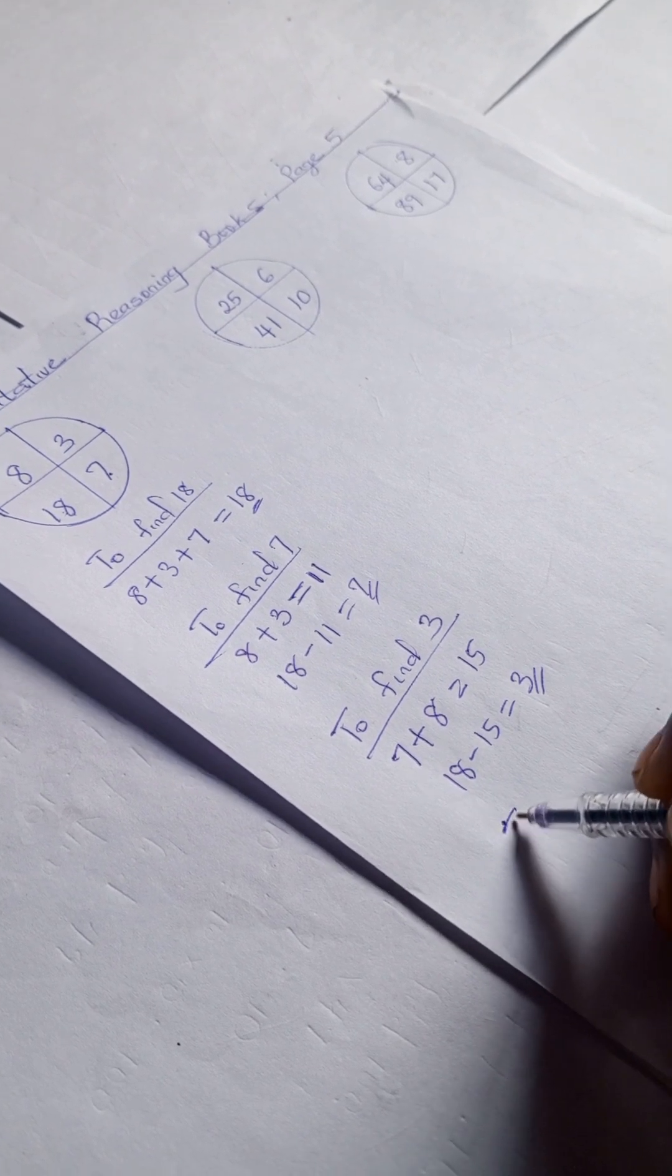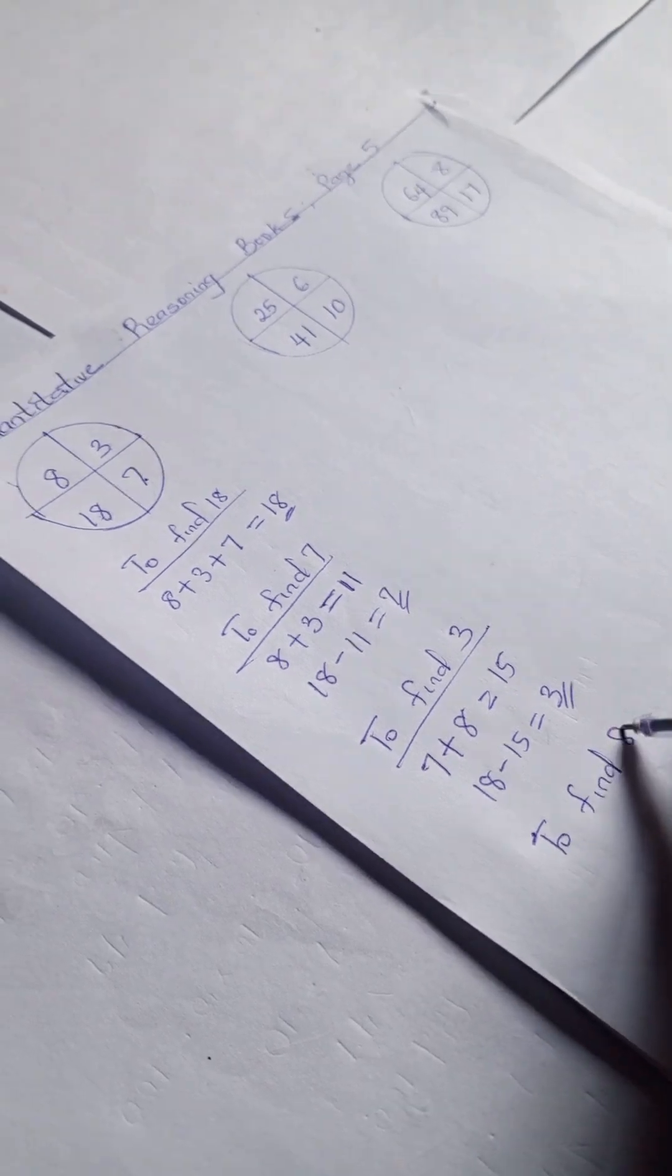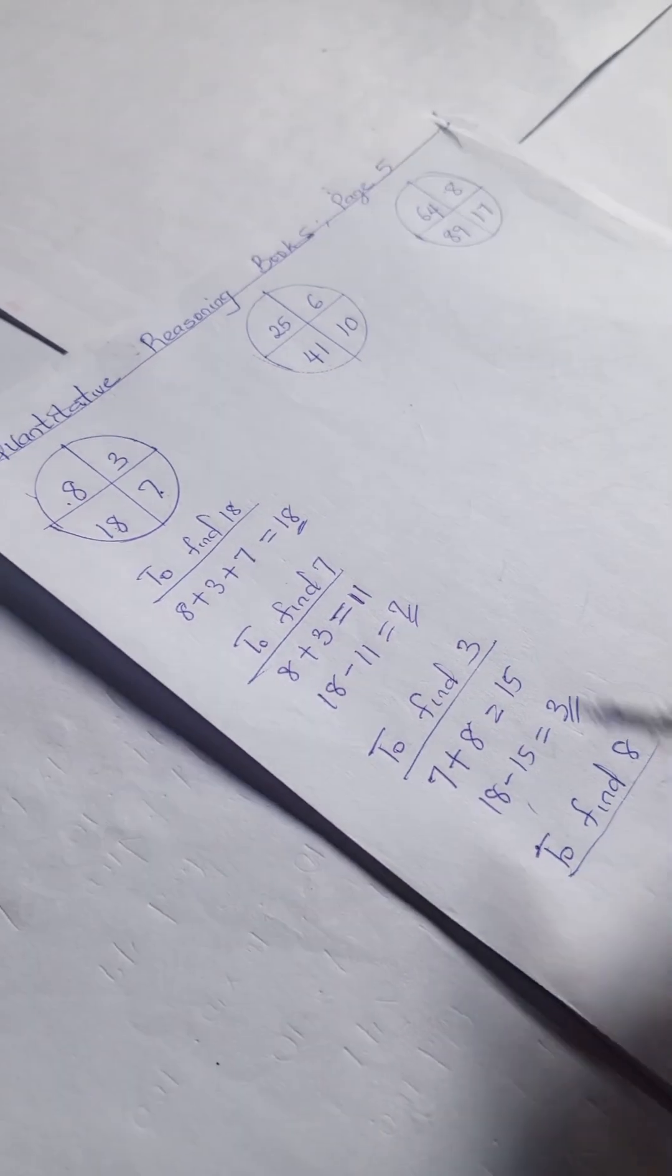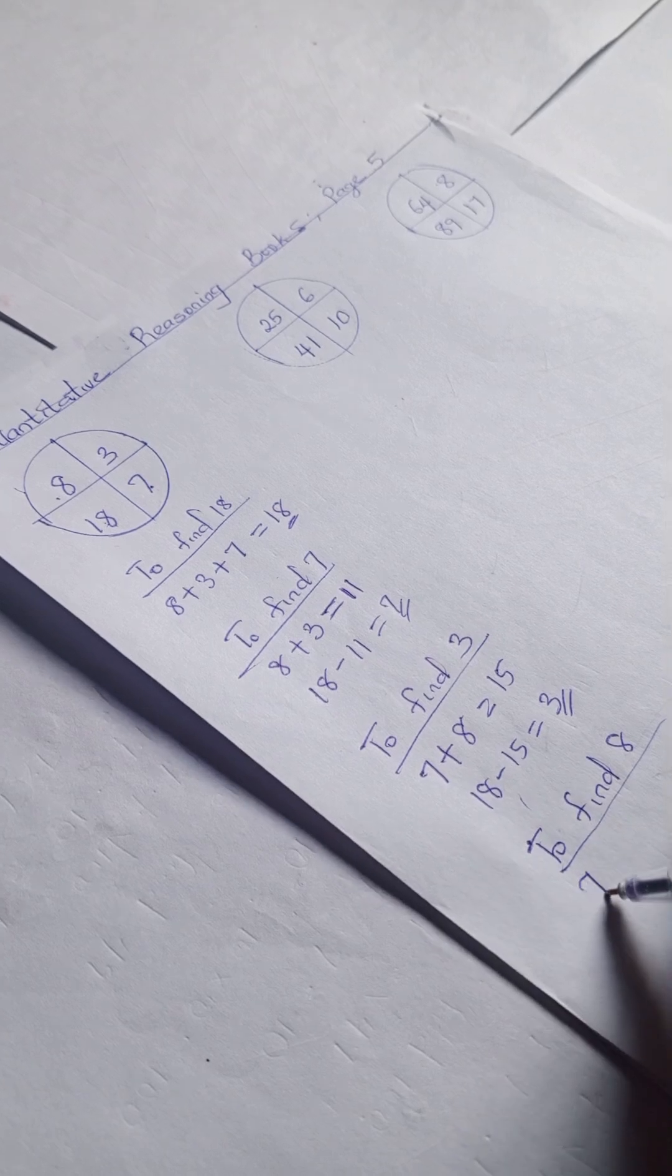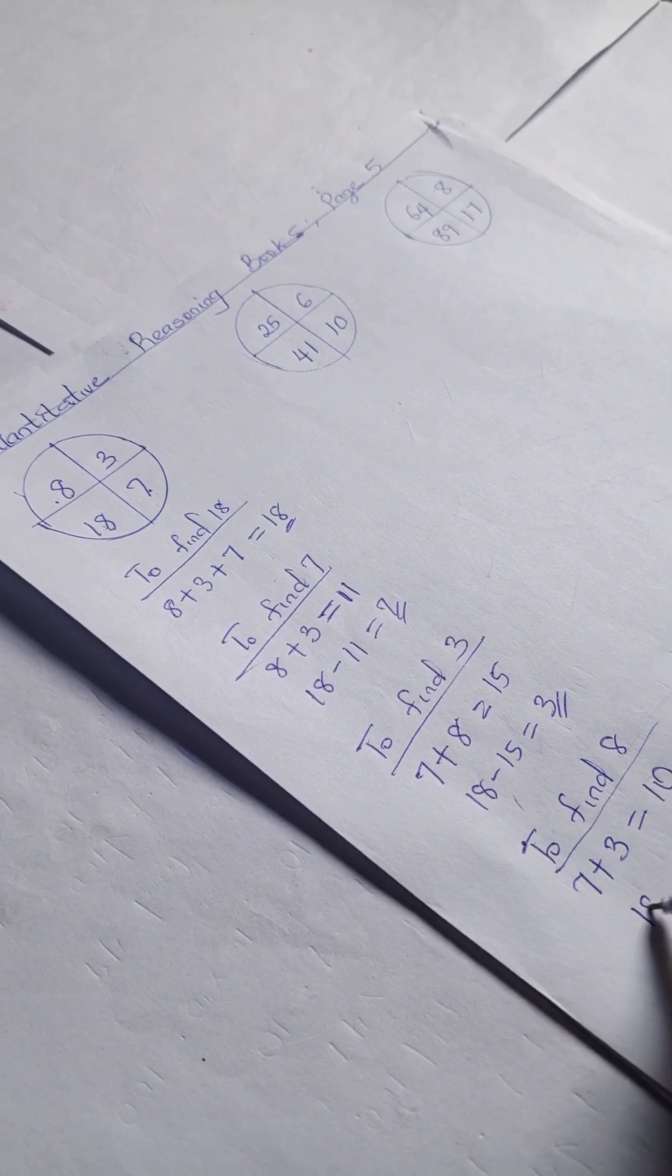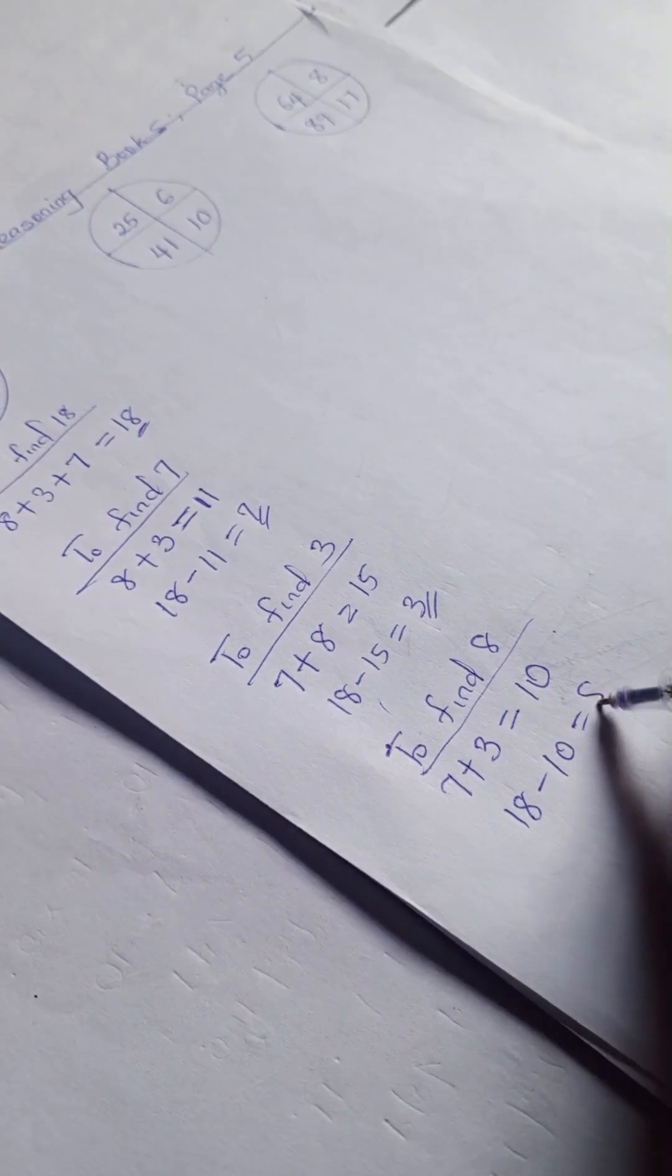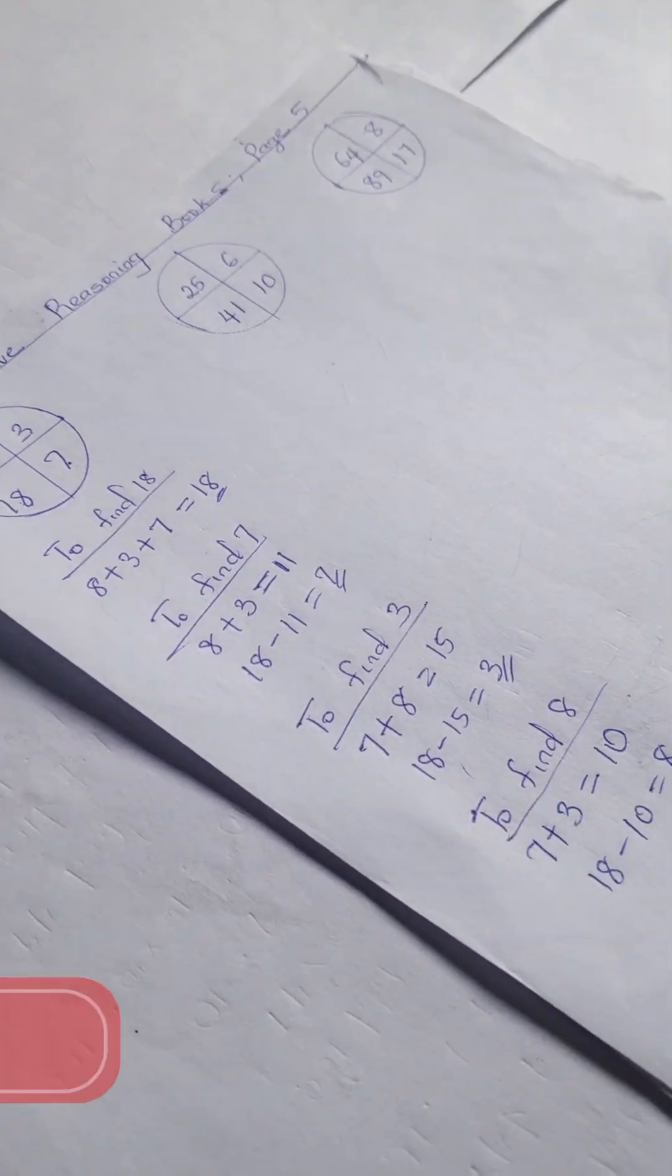So to find 8, we have 7 plus 3 equals 10, and 18 minus 10 that gives us 8. Right, so let's try out another example and see how it goes.